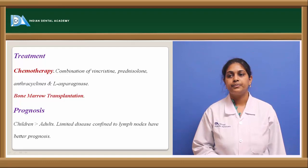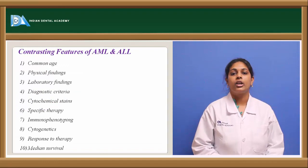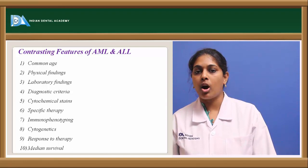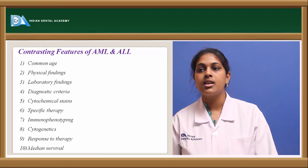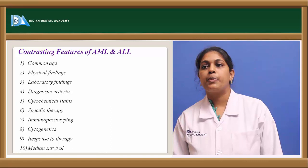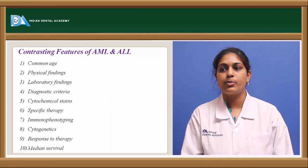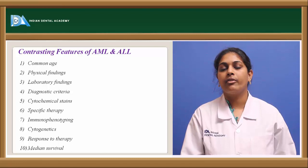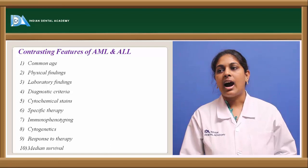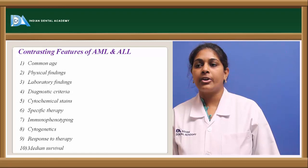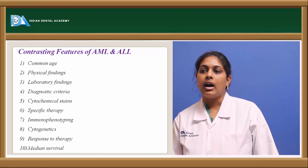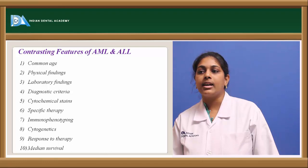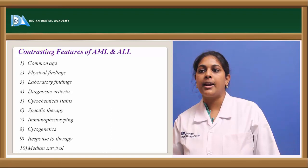Contrasting AML and ALL: AML most commonly occurs at 15 to 40 years of age, while ALL occurs under 15 years. Physical findings in AML include splenomegaly, hepatomegaly, lymphadenopathy, bone tenderness, and gum hypertrophy. In ALL, splenomegaly, hepatomegaly, and lymphadenopathy are graded as more severe, and bone tenderness and CNS involvement are also observed. Total leukocyte count ranges from low to high in both. In AML, predominant cells are myeloblasts and promyelocytes; in ALL, lymphoblasts predominate in blood and bone marrow.